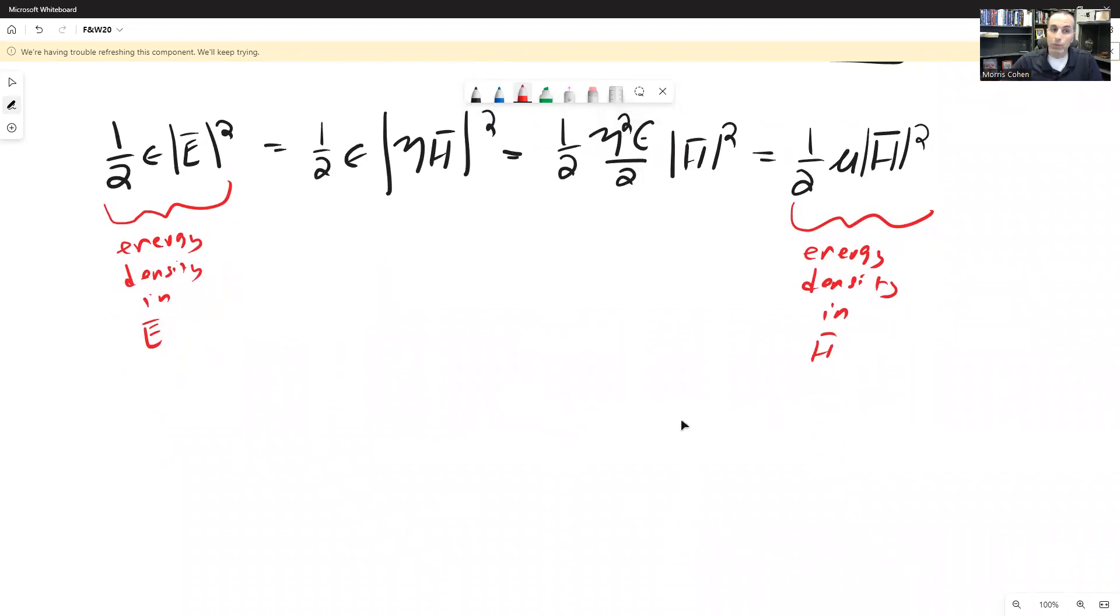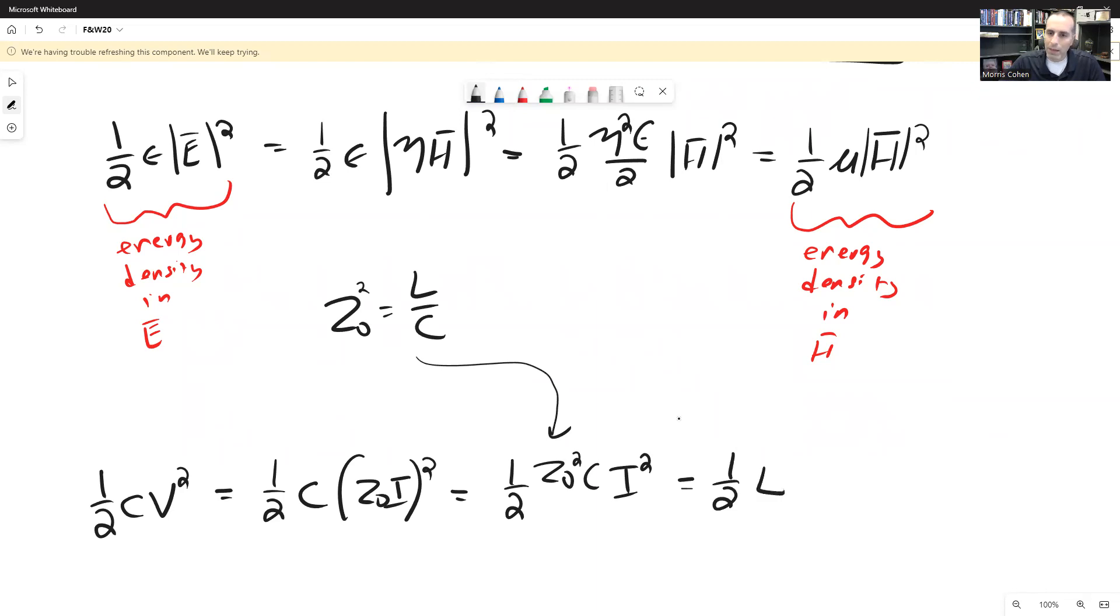The same, by the way, can be said true for simple circuit elements. And so if we start out with one-half C times V squared, which represents the energy stored in a capacitor, and then we apply the same relationship, one-half times C times Z0I squared. Since in any transmission line, the intrinsic impedance Z0 is the ratio of the voltage to the current, and now we're going to pull out the Z0 squared and make this one-half times Z0 squared C times I squared, but of course, Z0 squared equals L over C. So plug that into here, and this will be one-half times L times I squared, and that is the energy stored in an inductor.